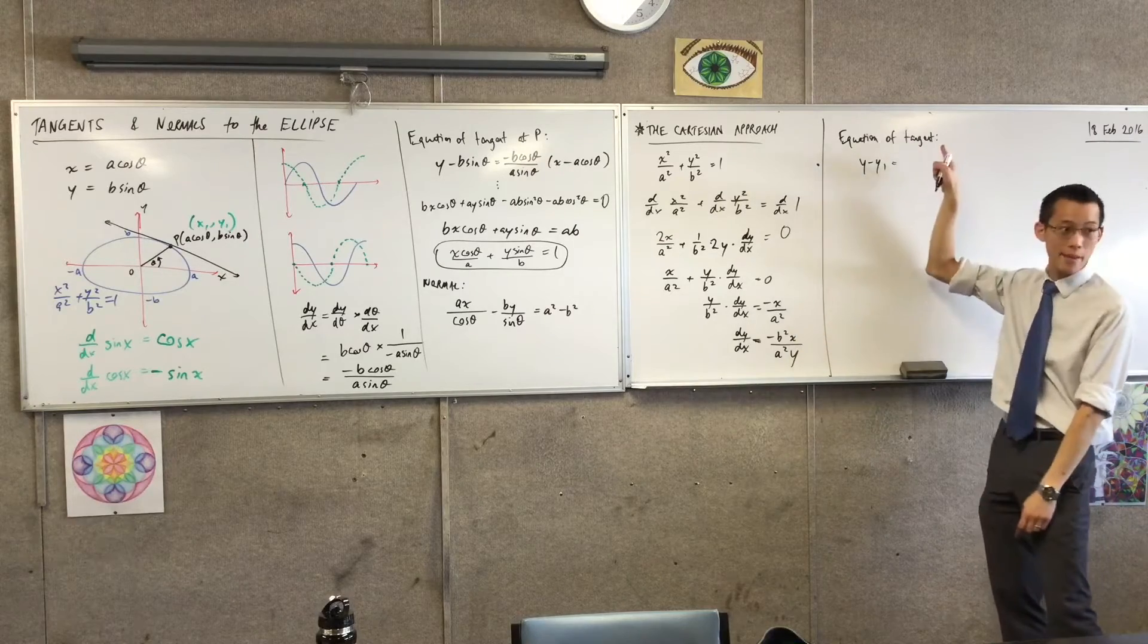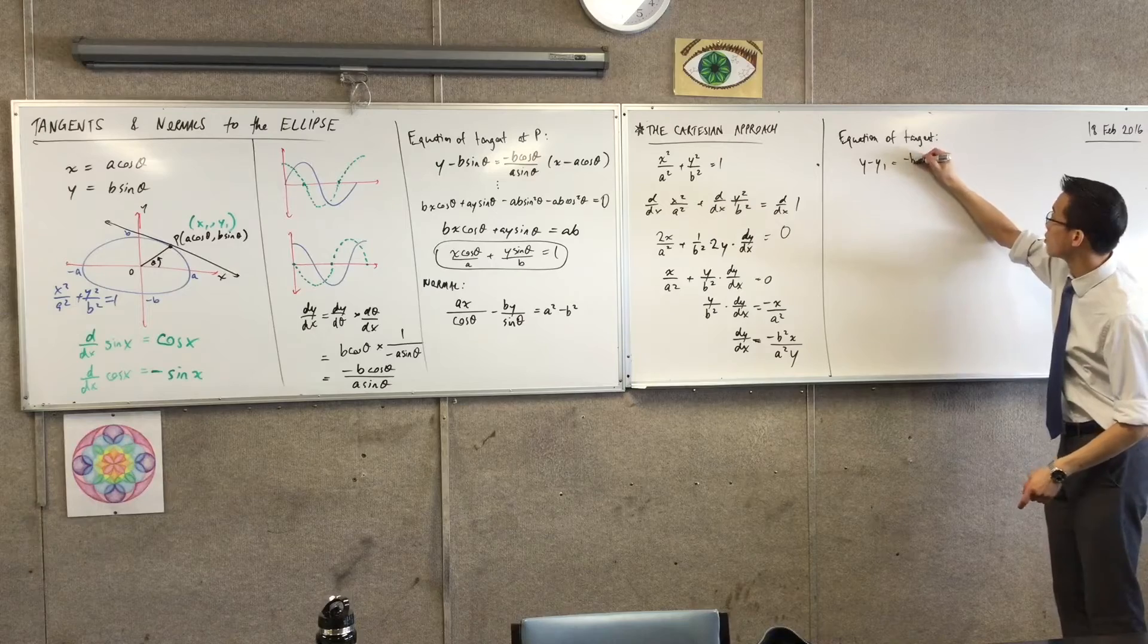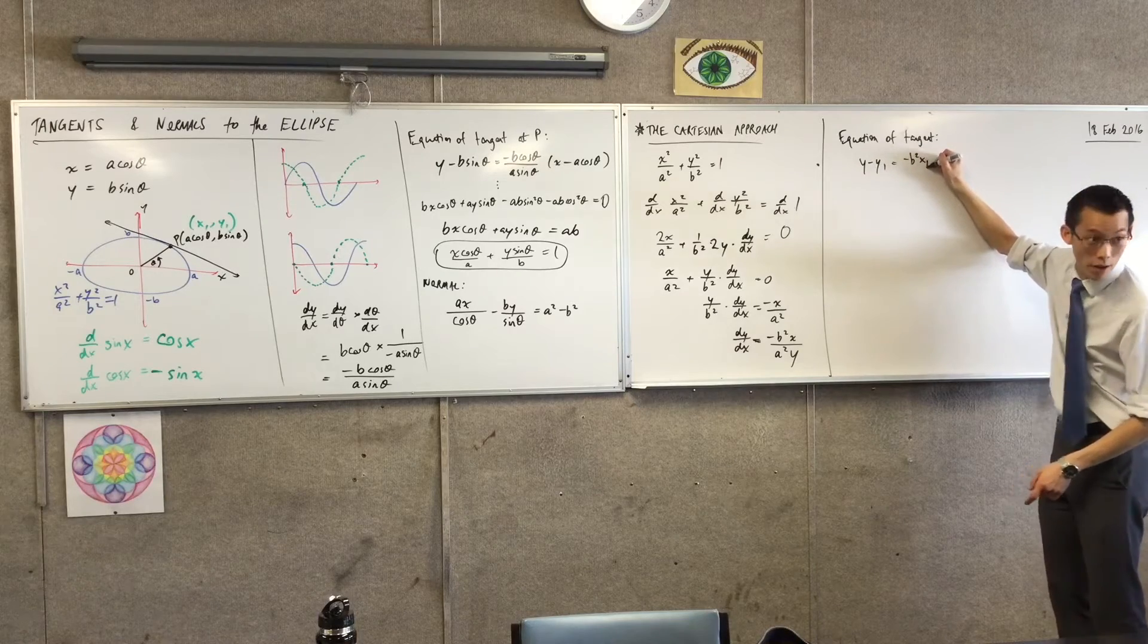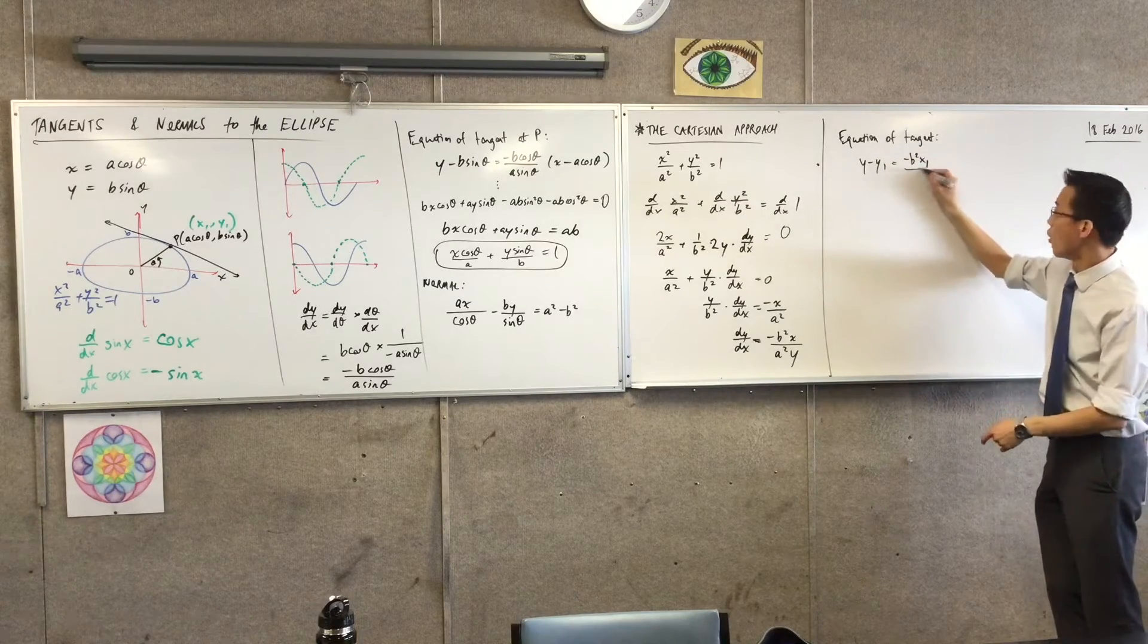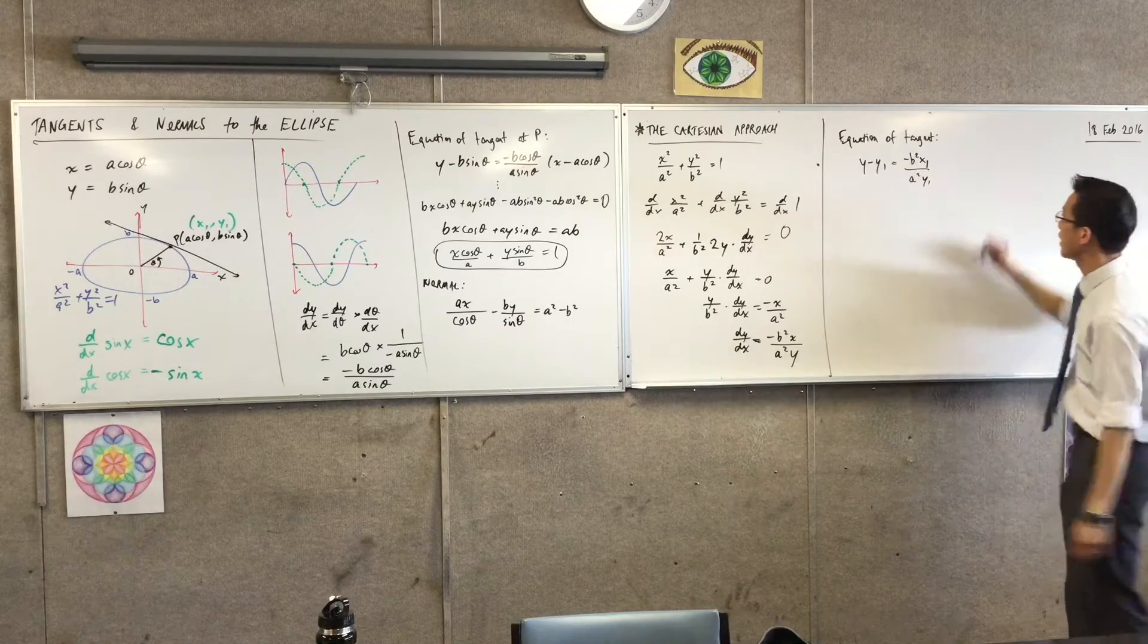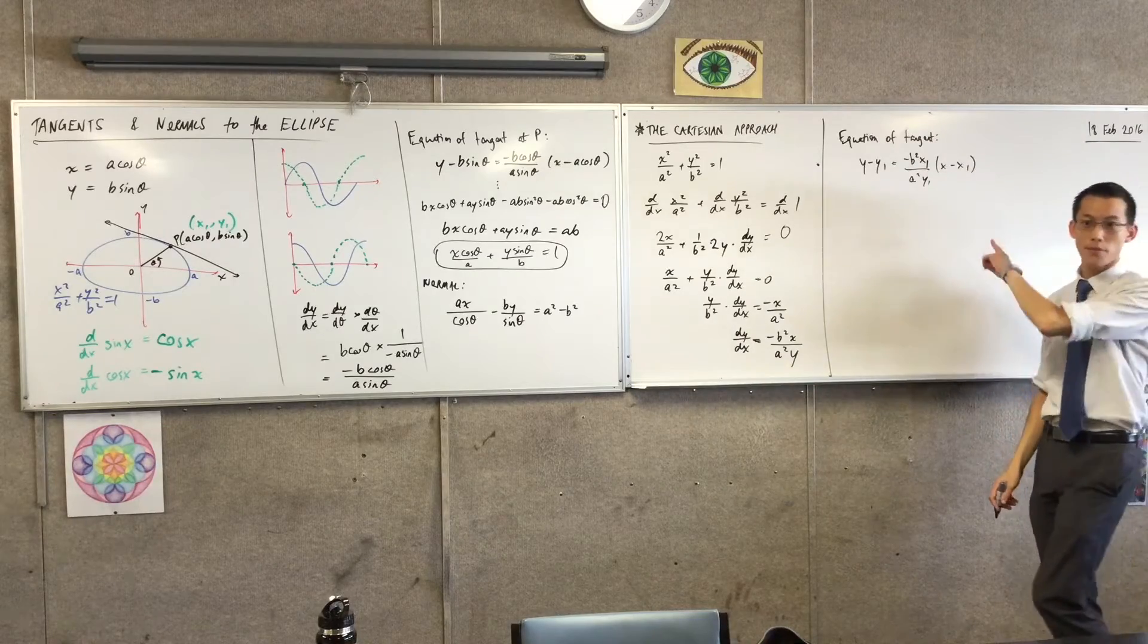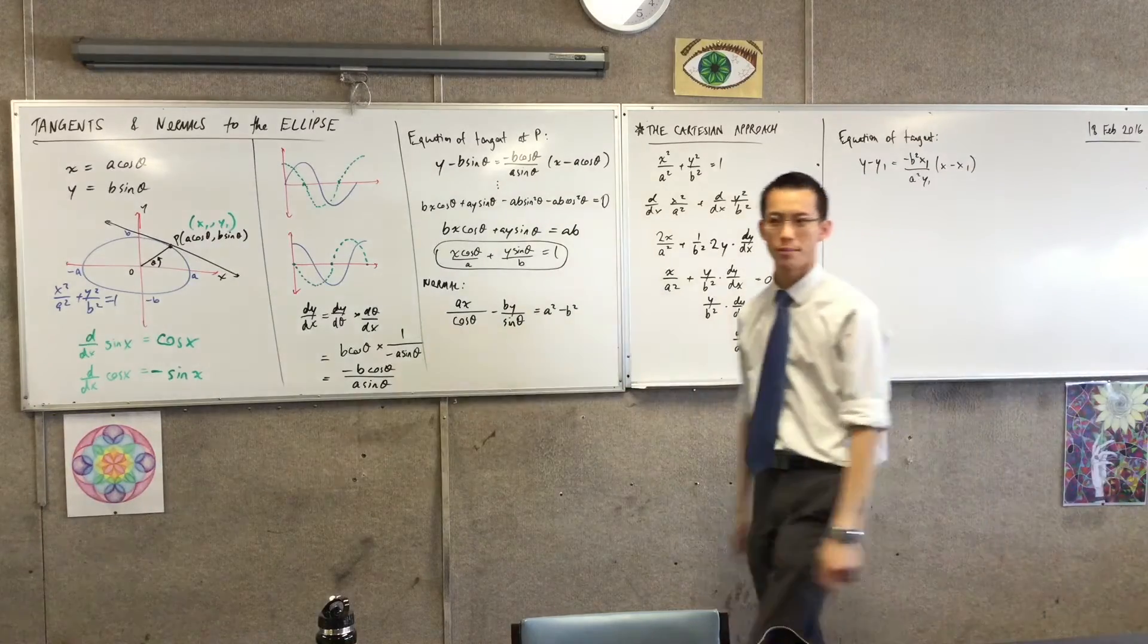A lot of people just put this into m. That's not a number. It's a function. So instead of that, I'm going to put minus b squared x₁ on a squared y₁. It's an actual number. And then I've got my x minus x₁ in there. And then I want to simplify this thing. Why don't you have a go? See what you end up with.